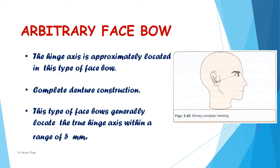This picture shows the Ritchie condylar marker. The condylar rods are positioned approximately 13 mm anterior to the auditory meatus on a line running from the outer canthus of the eye to the top of the tragus. This line is called the canthus-tragus line, and it is drawn using a marker known as the Ritchie condylar marker. This is not done for earpiece type facebow where the earpiece is inserted into the external auditory meatus. This method generally locates the rods within 5 mm of the true hinge axis of the jaws.